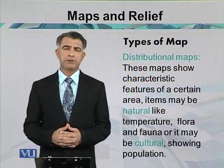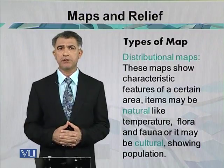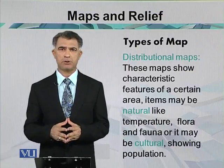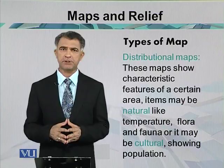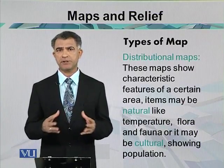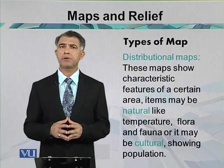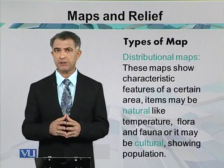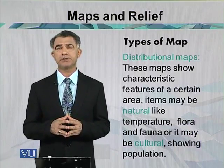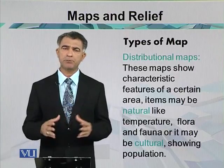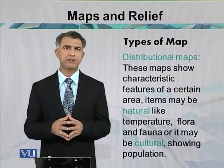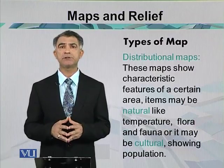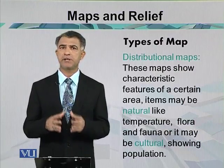The next category is the distribution map. It shows certain data related to population or natural aspects of the country such as temperature, rainfall, and precipitation. When dealing with population clusters, we are looking at the major population distribution and thinly populated areas. When dealing with temperature, we consider not only daily temperature distribution but also monthly and annual data.